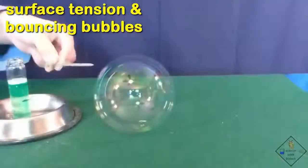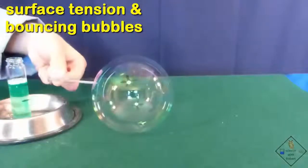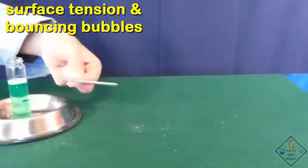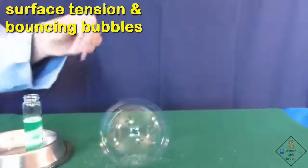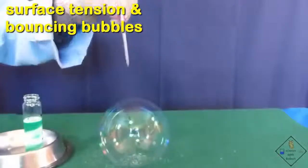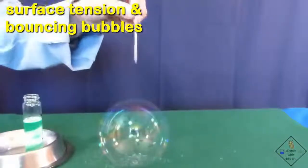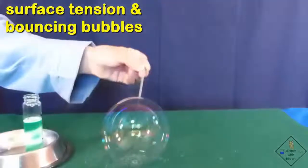When a dry nail touches a bubble, the bubble immediately pops. But when a nail is first dipped into the bubble's solution, it can actually pass through a bubble. That is because with a wet nail, the surface tension of the bubble is never broken.